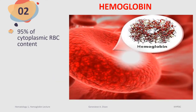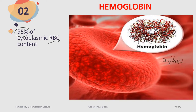Hemoglobin comprises approximately 95% of cytoplasmic RBC content, so an RBC contains mostly hemoglobin. Remember, a mature RBC does not contain any organelles — it is devoid of mitochondria, endoplasmic reticulum, and so on. So what is inside a red blood cell? It is made up mostly of hemoglobin. One RBC can contain approximately 270 million molecules of hemoglobin, and one hemoglobin can carry four oxygen molecules, making approximately 1 billion oxygen molecules that one red blood cell can carry. That is how efficient one red blood cell can be.